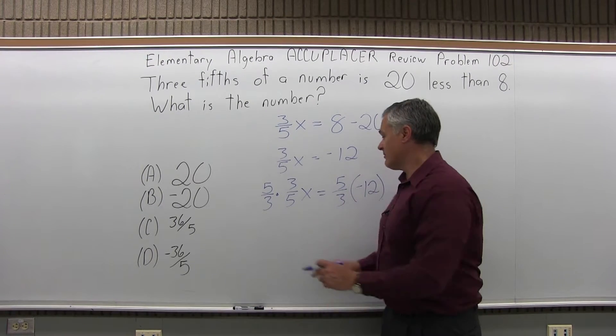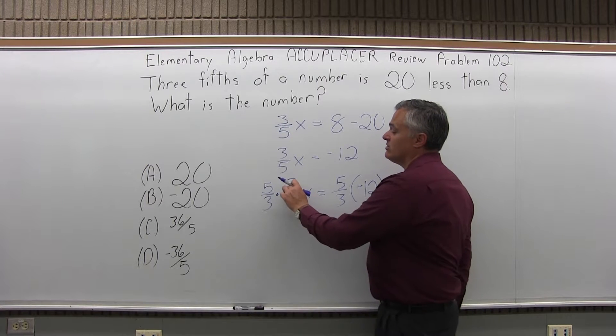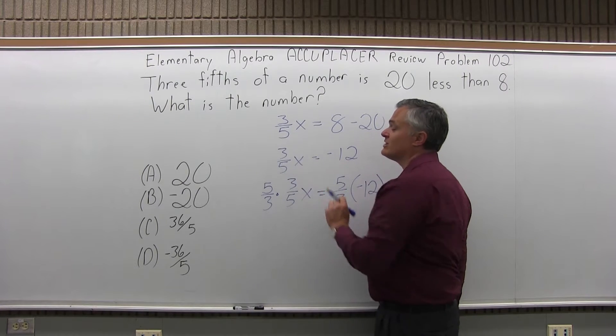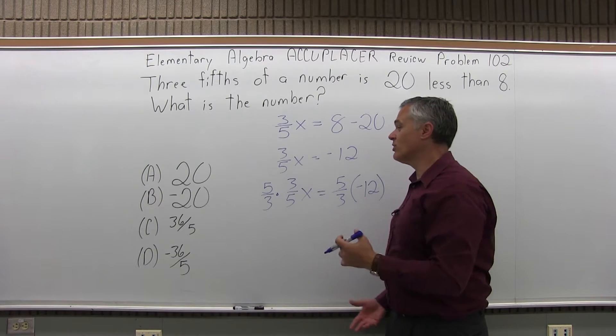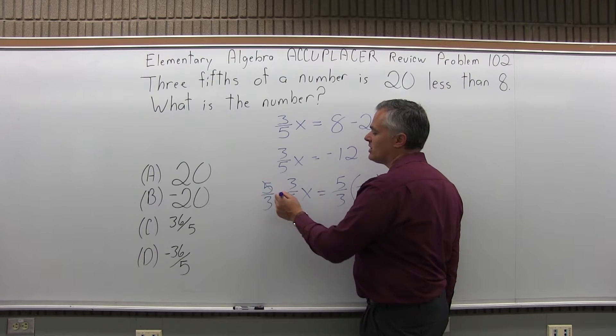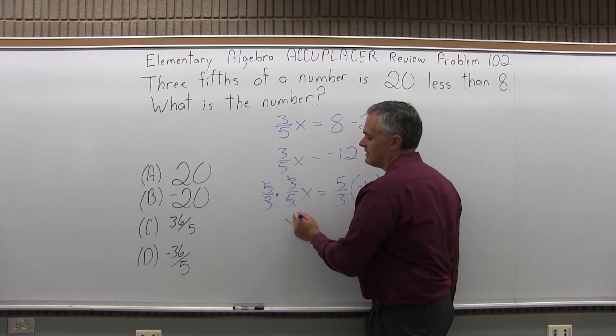And I did the same thing on both sides, I multiplied times five-thirds, and I chose that because it would cancel the fraction in front of my variable that makes the problem look so difficult. So on the left, fives cancel, threes cancel, I have x equals.